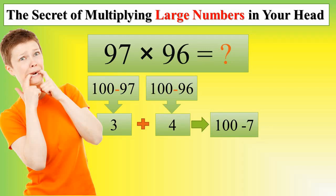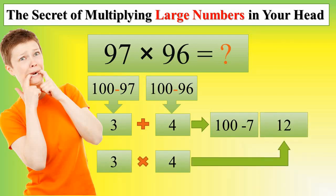Then we multiply those two numbers together: 3 multiply 4 equals 12. This is the second part.